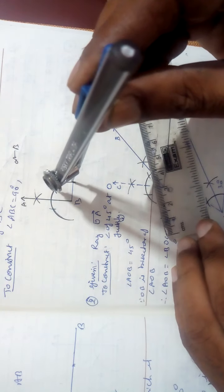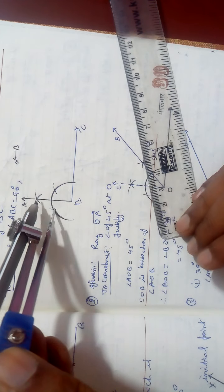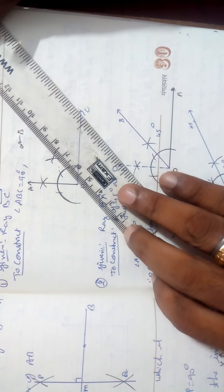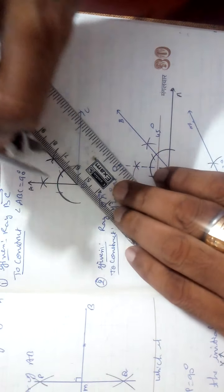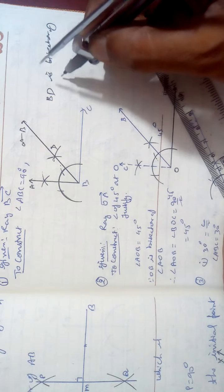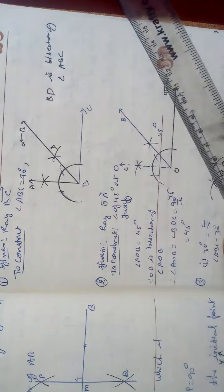Then bisect it. Mark an arc this side and from this point also mark one. Join and produce — you get the bisector. If the intersection point is D, then BD is the bisector of angle ABC.